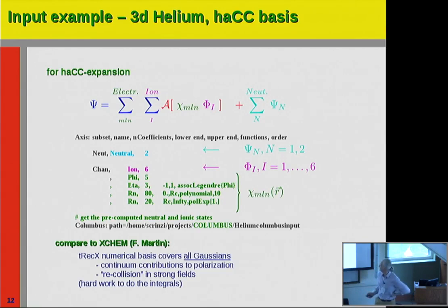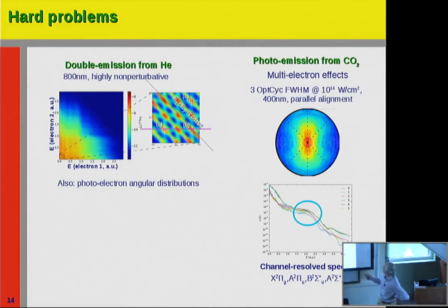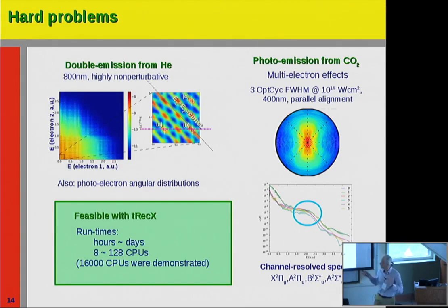Does the approach work? Yes. We have produced helium double ionization at 800 nanometers — not easy. We have produced CO2 photoelectron spectra, channel-resolved — also not easy. These are the typical run times on that scale. We don't need that one big calculation; we need parameter studies.